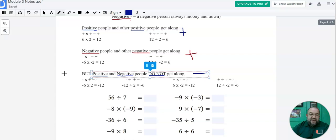So if I have negative times a positive, I'm always going to get a negative number. So negative 6 times 2 is going to be negative 12. Negative 12 divided by 2 is going to be negative 6. And it works the other way around as well. 6 times negative 2 is going to be negative 12, or 12 times negative 2 is going to be 6.